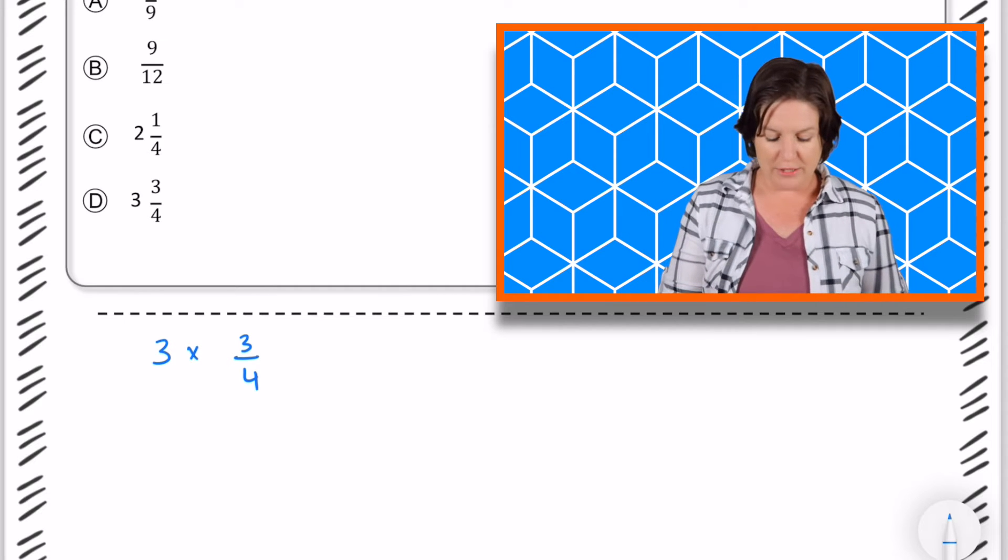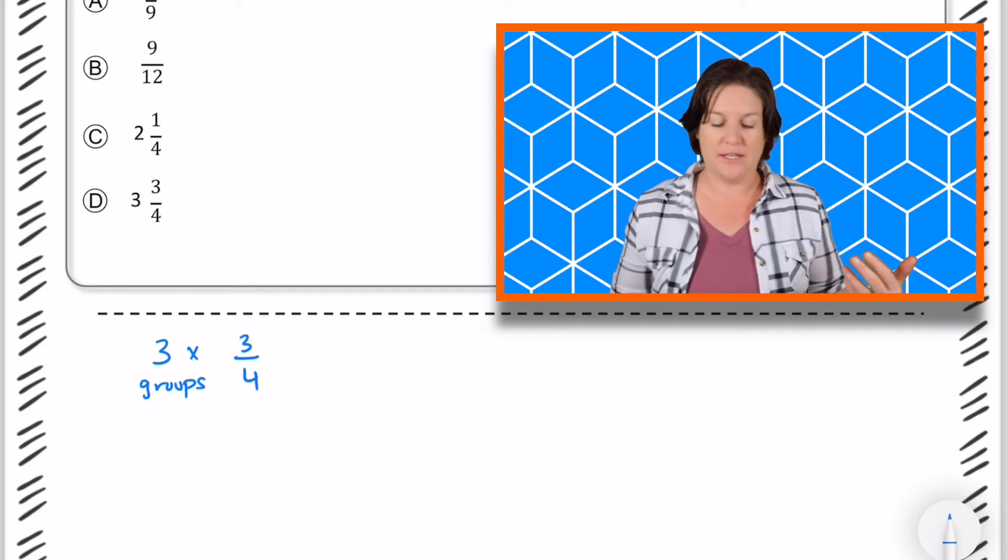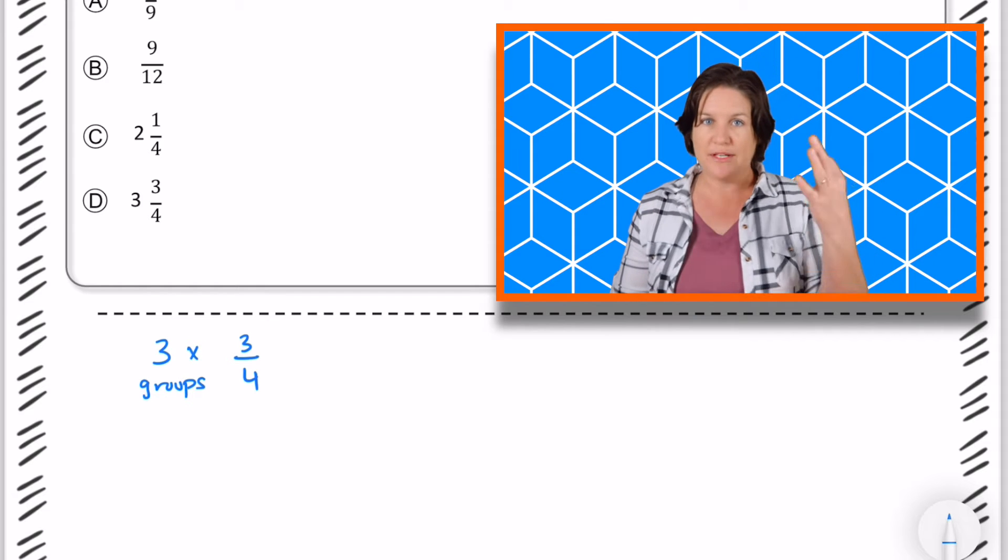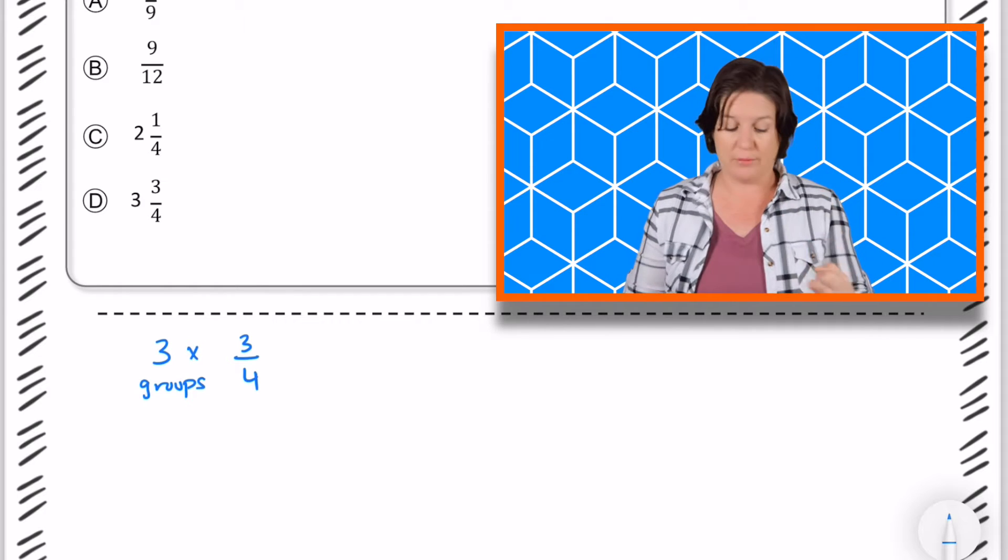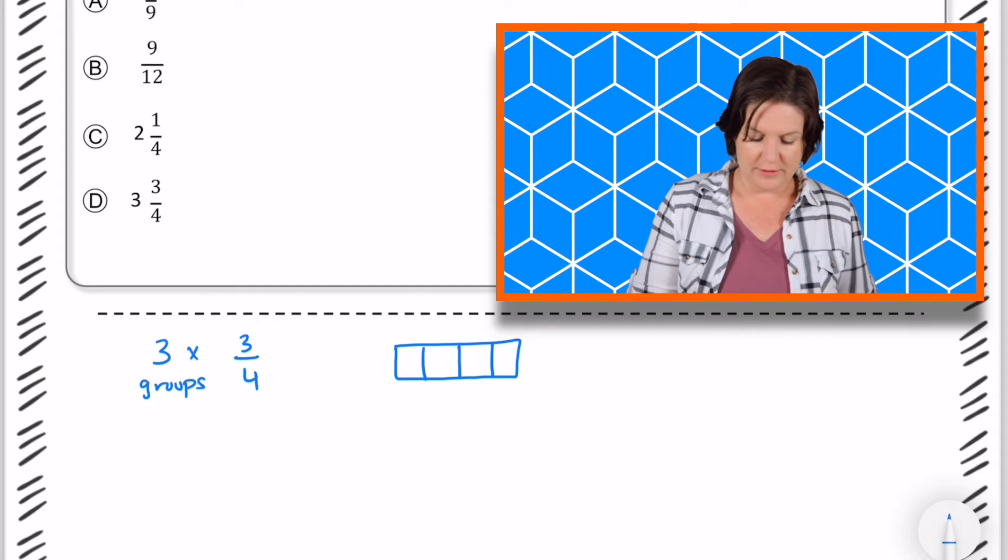So that means that we would have three groups with 3/4 in each group. So if I draw that out, I would need three groups representing 3/4. So here's one group, break it into fourths, and I can shade in three of them.